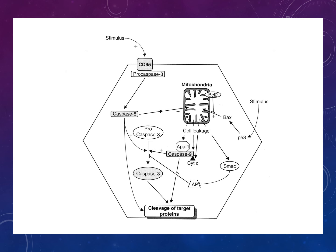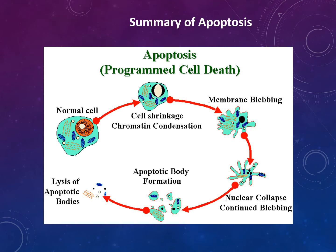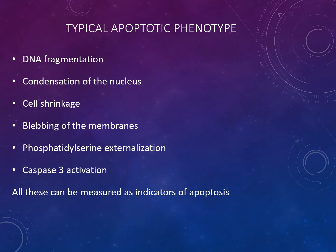The diagram shows the process of apoptosis leading to the cleavage of target proteins. To summarize the apoptosis process: the cell shrinks, chromosomal condensation occurs, membrane blebbing occurs, nuclear collapse, continued blebbing, apoptotic body formation, and lysis of apoptotic bodies. The typical apoptotic phenotype includes DNA fragmentation, condensation of the nucleus, cell shrinkage, blebbing of membranes, phosphatidylserine externalization, and caspase 3 activation — all of which can be measured as indicators of apoptosis.